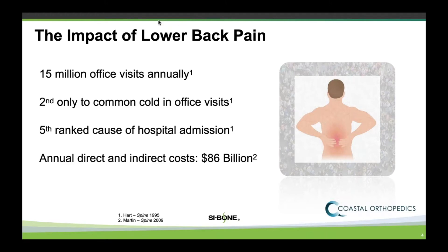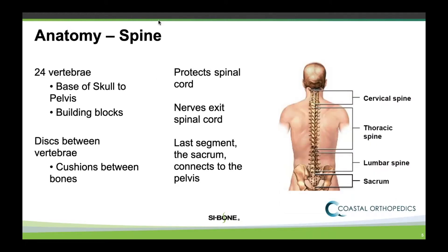It has huge impacts on our society, on our patients, and on the medical industry financially in general. So the anatomy of the spine: there are 24 vertebrae — seven cervical vertebrae, generally 12 thoracic and five lumbar vertebrae. The lumbar vertebrae terminates and meets the sacrum. Between each vertebrae, there are discs that provide cushion between the bones.